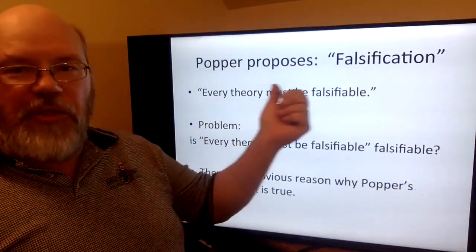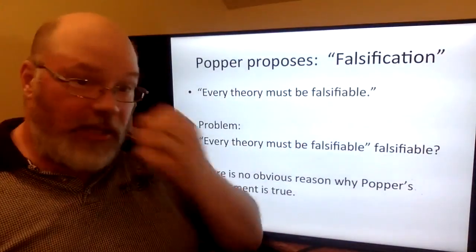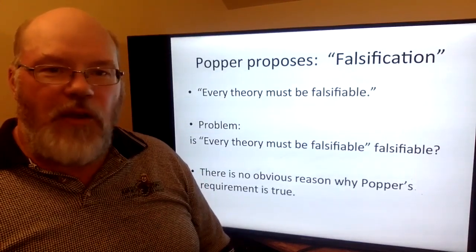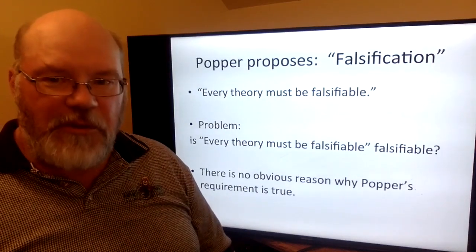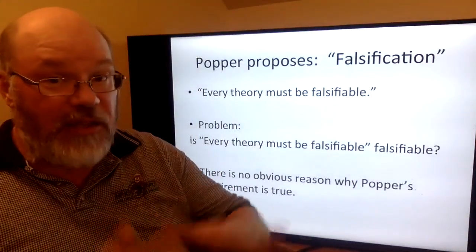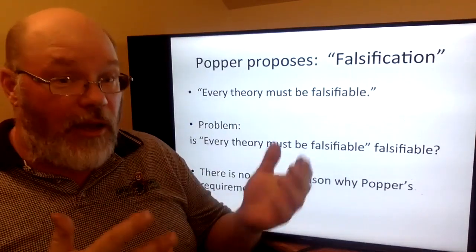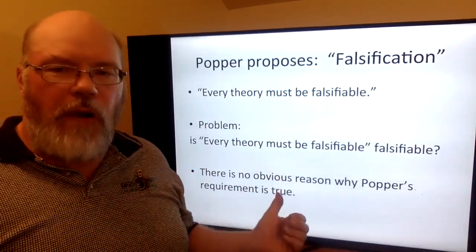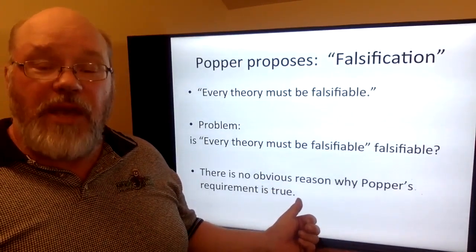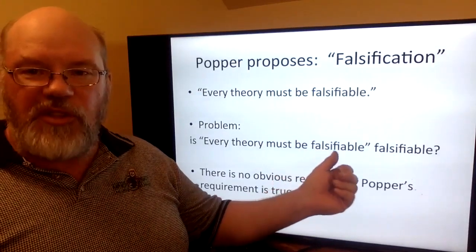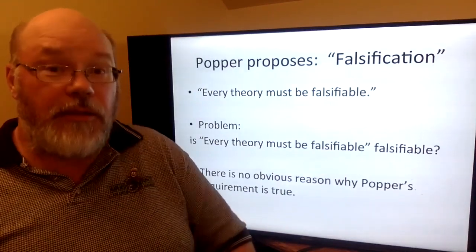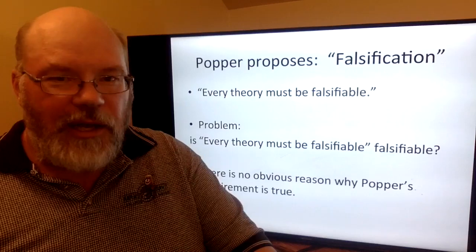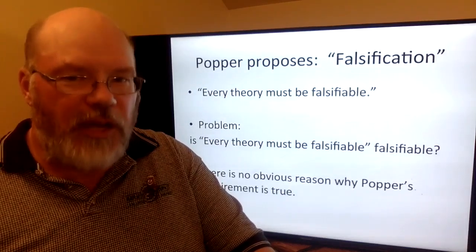There's a problem with this, which is that Popper is saying every theory must be falsifiable. We could ask him: is your theory falsifiable? What evidence would you need in order to conclude that it's false that every theory must be falsifiable? Popper makes this universal claim and doesn't really fulfill his own standard — there's no obvious reason why Popper is himself making a claim that's obviously falsifiable. That's why we don't say 'I'm a falsificationist.' Popper got shot down pretty quick on that one.